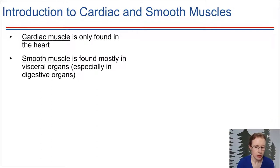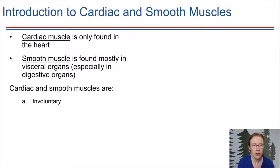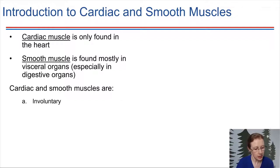So what do these two muscle types have in common? They have some things in common, so we're going to start off by grouping them together. These two muscle types are involuntary — we don't have conscious control over them. They are regulated by the autonomic nervous system.